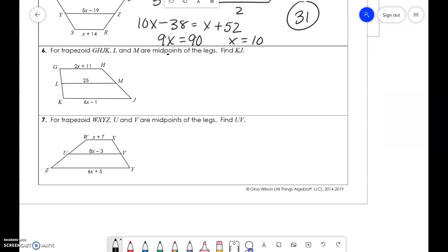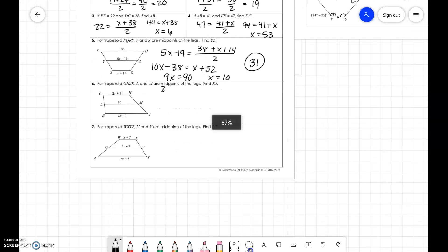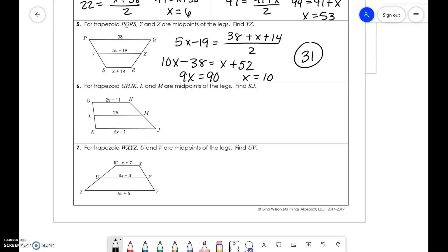Last two. 25 equals 2X plus 11 plus 6X minus 1 all over 2. Multiply it. So, 50 equals 8X plus 10. And we get 8X equals 40, X equals 5. Find KJ. Plug in. 30 minus 1 is 29.